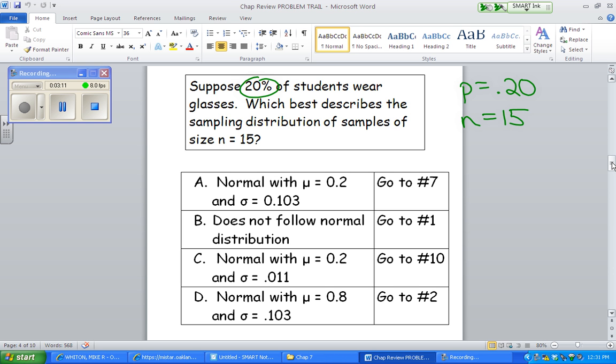So, let's see. Our options, it's either normal with a certain mean standard deviation or does not follow normal. So, let's make sure. Let's see if it is normal. If n times P is greater than or equal to 10. Let's check that one first. n is 15. Right, P is 0.2. Is that number bigger than or equal to 10?